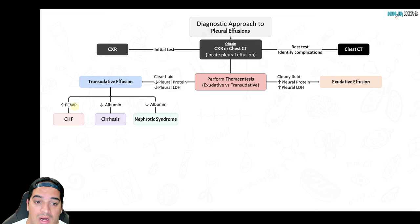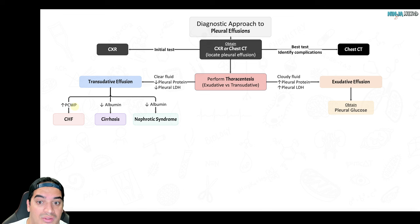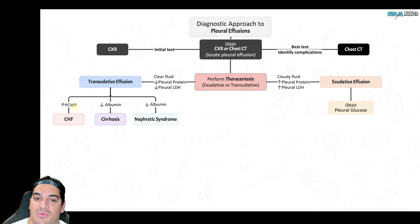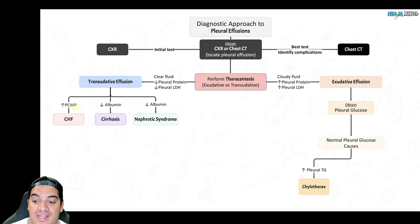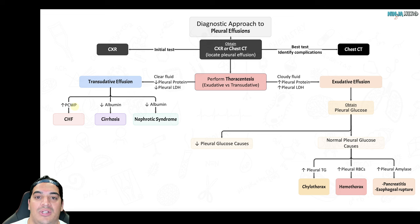For exudative effusions, getting a pleural glucose helps narrow the cause. Normal pleural glucose can suggest chylothorax (high triglycerides), hemothorax (red blood cells plus trauma history), or pancreatitis/esophageal rupture (elevated amylase). Low pleural glucose is remembered by the mnemonic MEAT: Malignancy, Empyema, Autoimmune disease, and Tuberculosis.